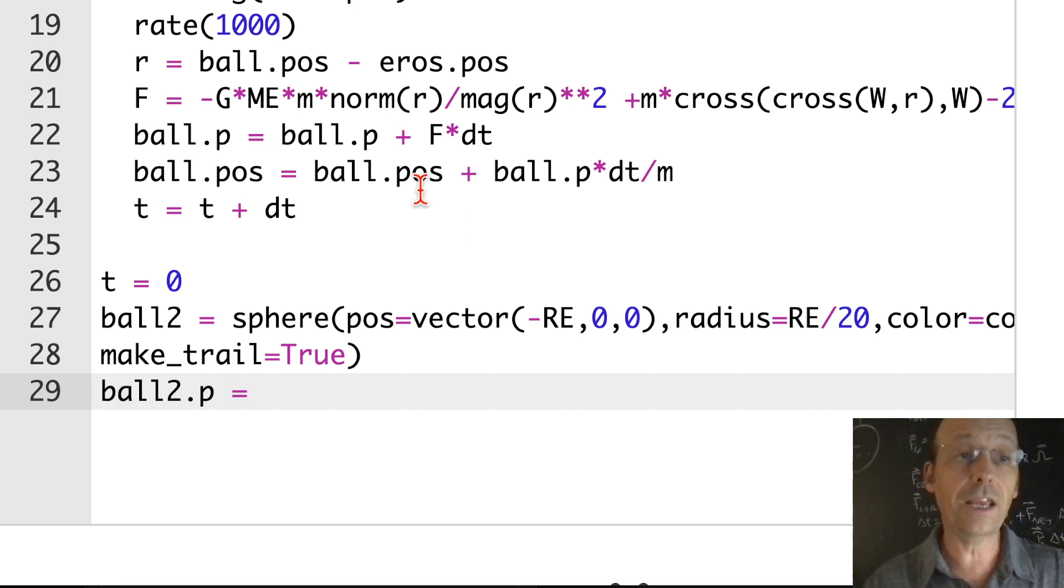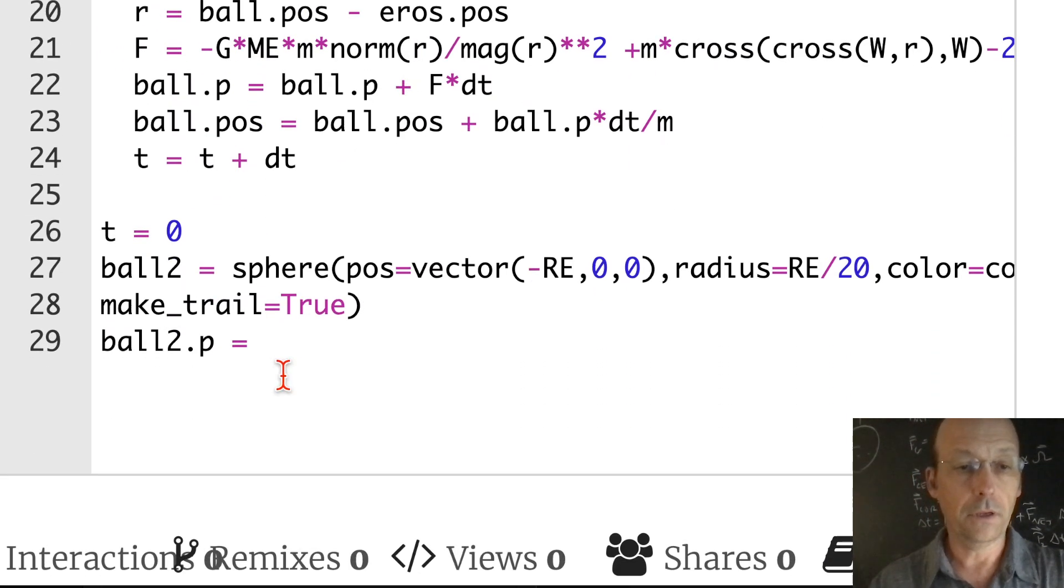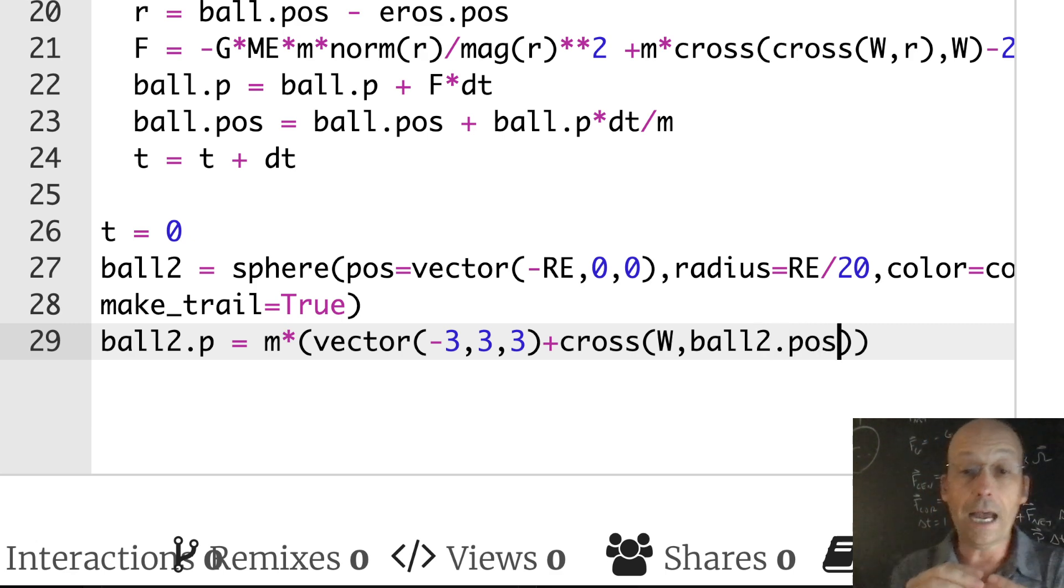I need to give it a velocity. Let's go ahead and make its momentum. Ball two dot P equals, I want the same thing as before. I'm going to take this, m times this. And then I have to add in the velocity of the object because of the rotation. Because now I'm in the frame outside of that. It's already moving because of the rotation, and I have to include that. If you know the angular velocity vector and the position vector, you can use the cross product to get the velocity. So I'm just going to add plus cross omega ball two dot pos. So that's going to take omega cross r and add it to that velocity, then multiply by mass. So it's going to have a different momentum.